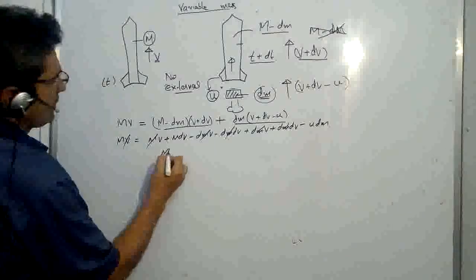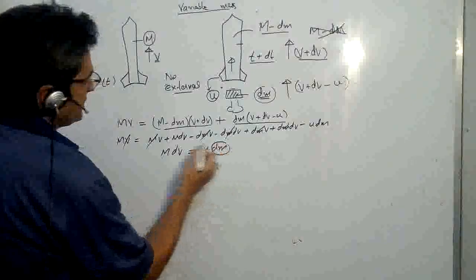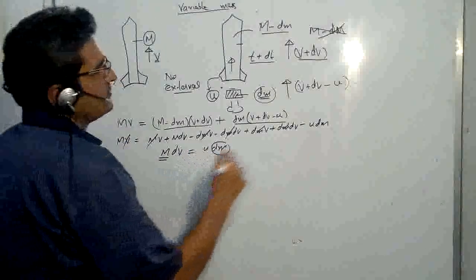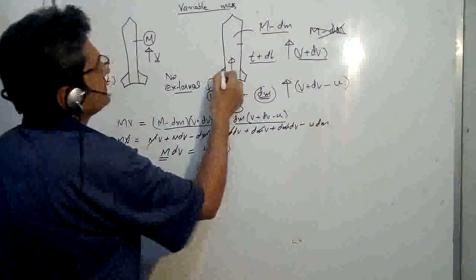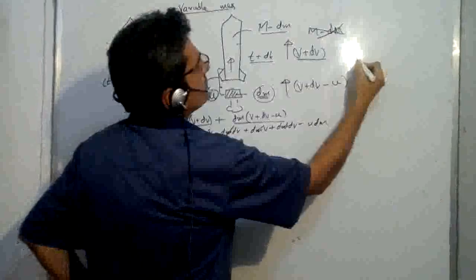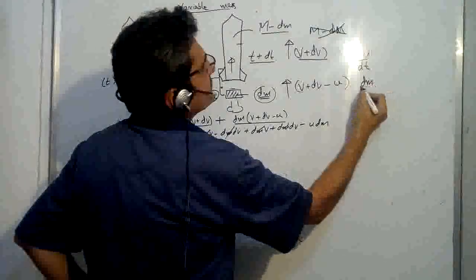So we get m dv is equal to u dm. This is small dm and this is capital M. So we have to have in the same form. Now let us write the relationship of change of mass of rocket and the exhaust.